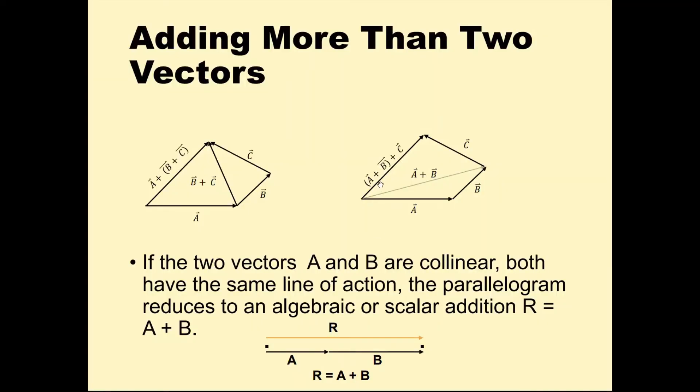In adding more than two vectors, the result doesn't change no matter how you group the individual vectors, which follows the associative law of addition. In the case of collinear vectors with the same line of action, it becomes simple scalar addition.